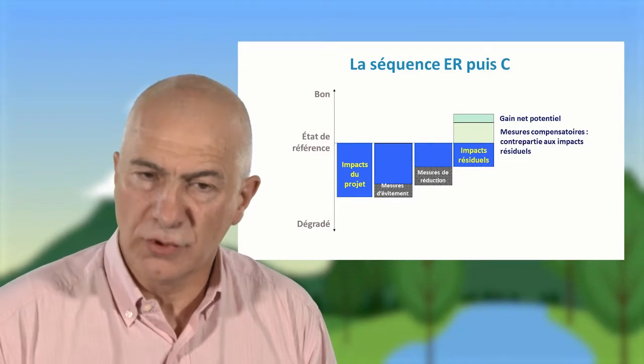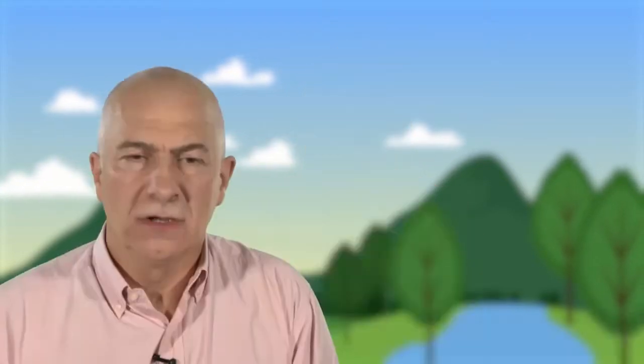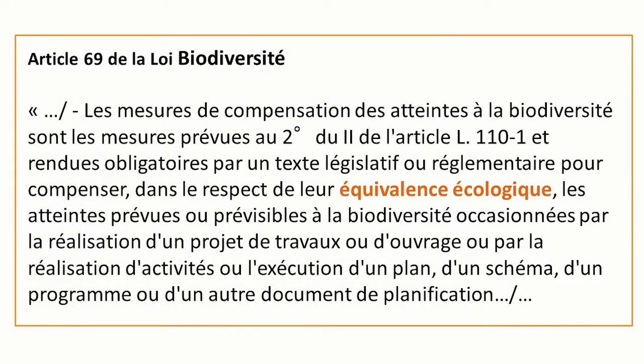La loi biodiversité de 2016 vient renforcer et préciser le cadre de la loi de 1976. Cette compensation apparaît aujourd'hui comme quelque chose d'incontournable. La loi le précise d'ailleurs, puisqu'elle parle d'obligation de résultat, d'équivalence écologique, et le caractère incontournable apparaît maintenant dans la loi de 2016 de façon très claire. Il est dit que cette compensation est rendue obligatoire par un texte législatif ou réglementaire, c'est la notion d'arrêté, par exemple.